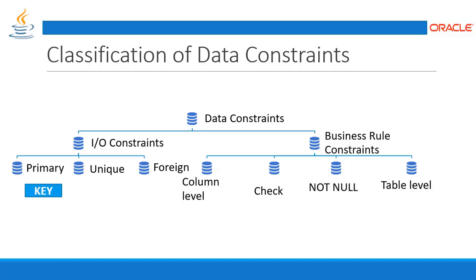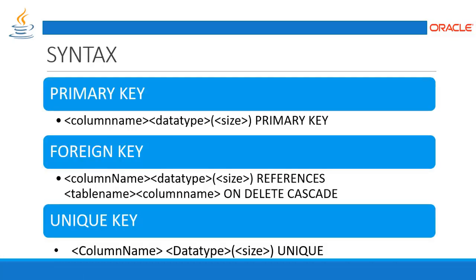Input/output constraints are more complicated to understand and require going through them in detail. When it comes to the primary key, this is the syntax defined in a table. There is also the foreign key syntax and the unique key syntax, which we will learn when we actually perform the execution.